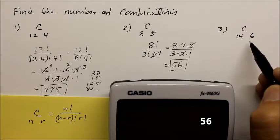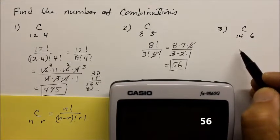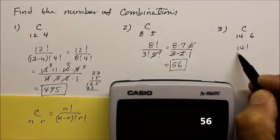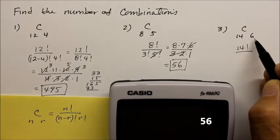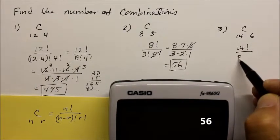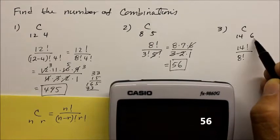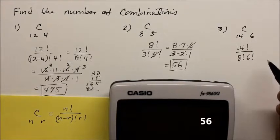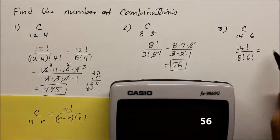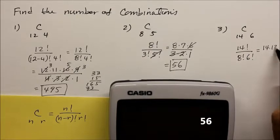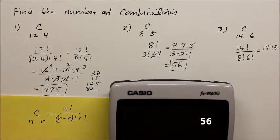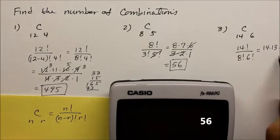And finally, here, 14 factorial over 14 minus 6, what's that? 8 factorial times that r object, 6 factorial. So 14 factorial is like saying 14 times 13 times 12 times 11 times 10 times 9. So let me do that over here instead.